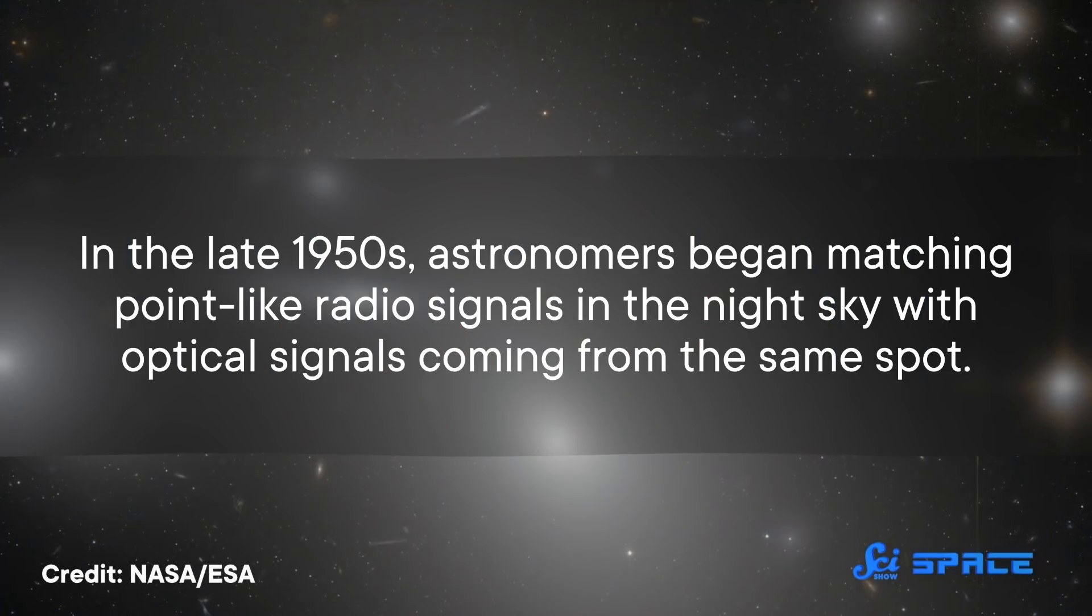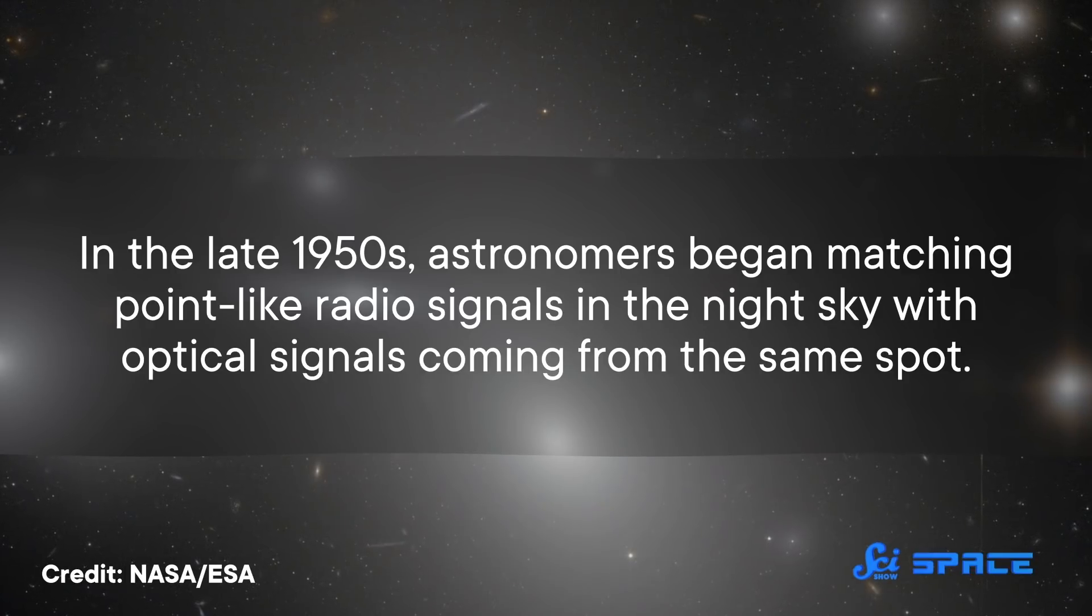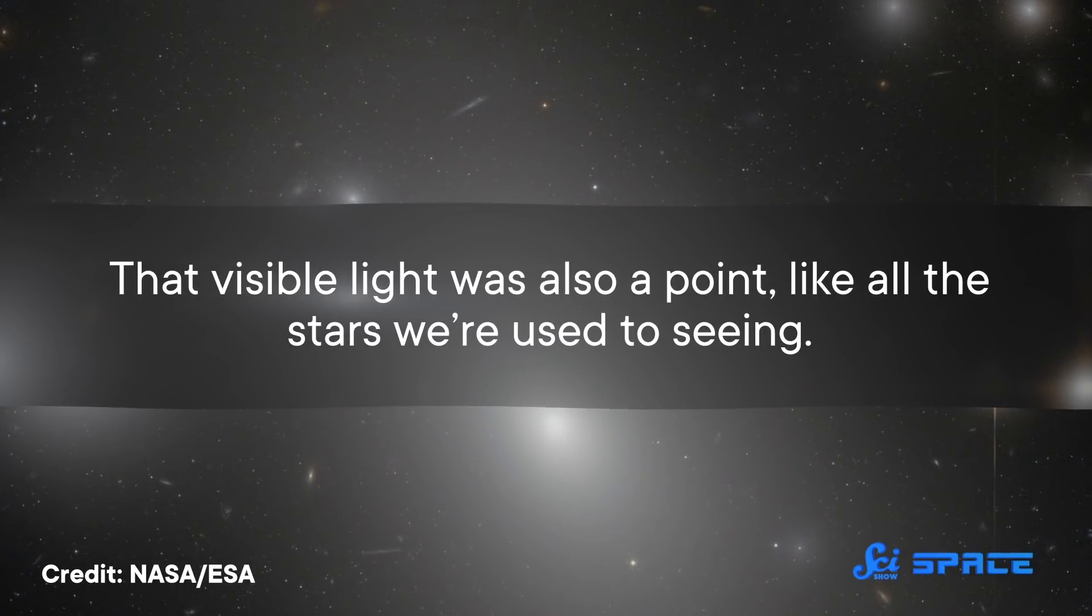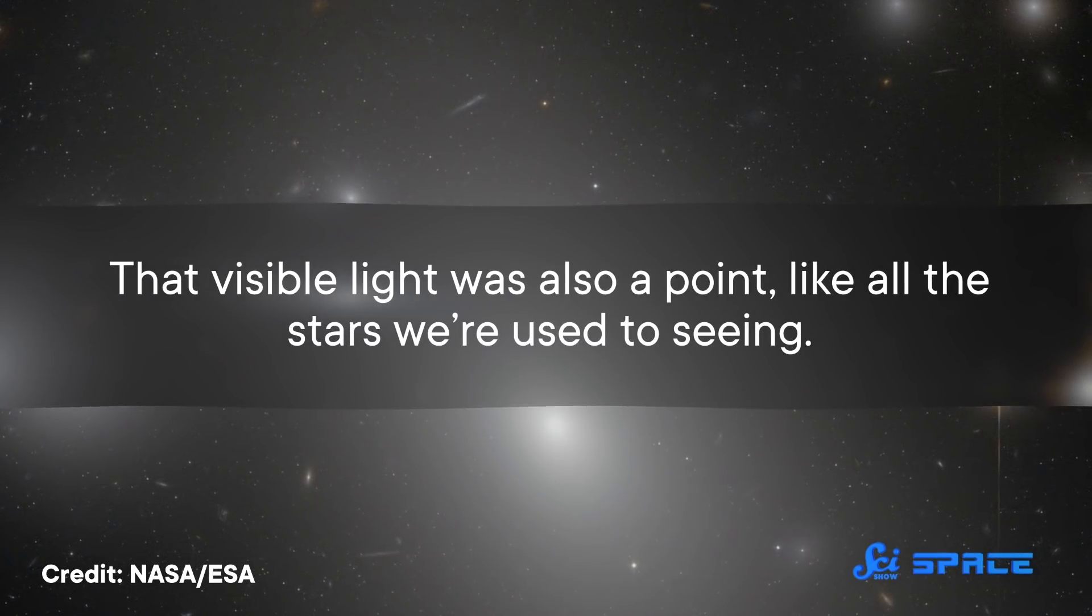In the late 1950s, astronomers began matching point-like radio signals in the night sky with optical signals coming from the same spot. That visible light was also a point, like all the stars we're used to seeing.